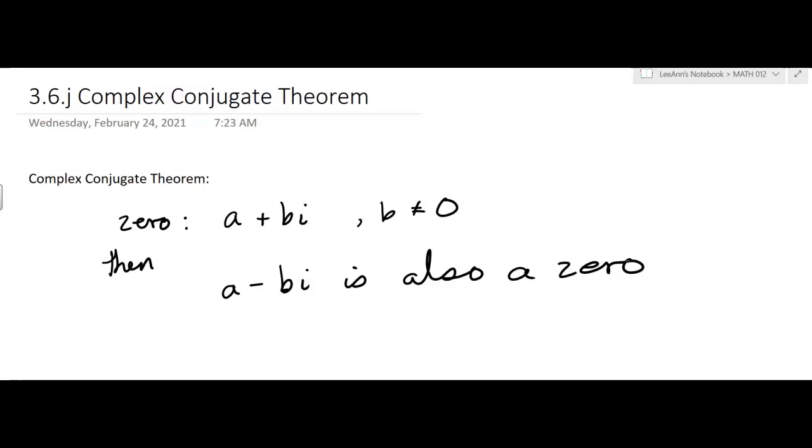So it's called the Complex Conjugate Theorem, so if you have a plus bi where b doesn't equal zero, so there's an imaginary part. If that's a zero, then the conjugate is also a zero. Thank you very much.